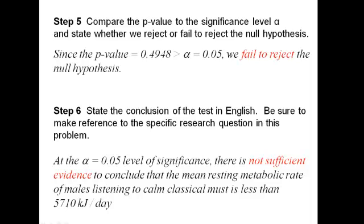Now, step 5. Since our p-value of 0.4948 is greater than α of 0.05, we fail to reject the null hypothesis.